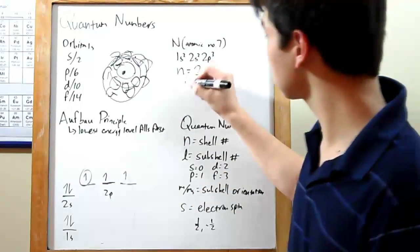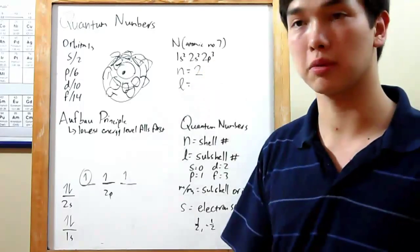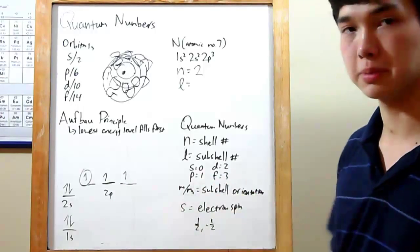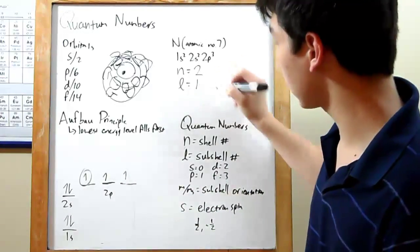Next is l. l is your subshell number. It tells you if you're working with an s, p, d, or f orbital. The numbers are over here. We're working with a p orbital. That corresponds to 1. So our l for that one is just 1.